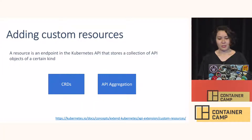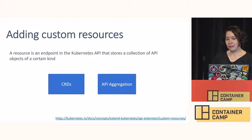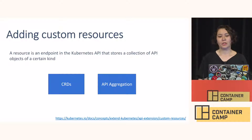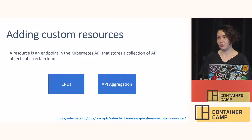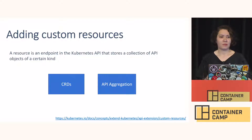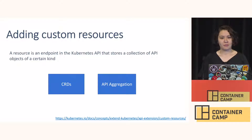A resource in Kubernetes is the API that saves structured data for you. There are two different ways of creating a custom resource: one is defining a CRD, and another is API aggregation. Each has its pros and cons. CRD is very simple and easy to use. With API aggregation, it provides more flexibility around versioning, conversion between versions, and how you want to save the data. You pick based on your requirements.